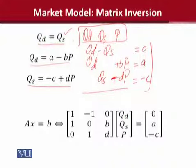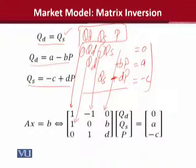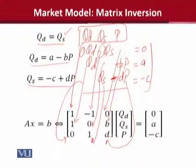Now P ka jo coefficient hai, is taraf wo B hai. Isi tarike se, QD ka coefficient in this case zero, aur QS ka coefficient one hai, aur P ka coefficient in this case D hai.